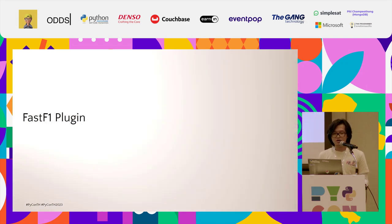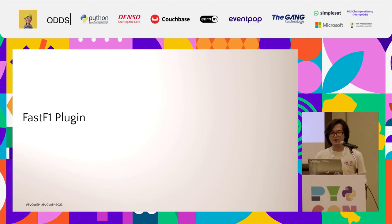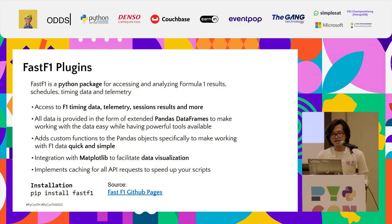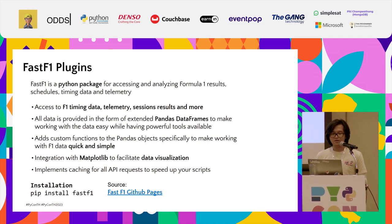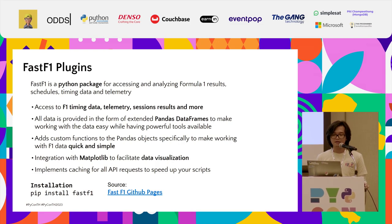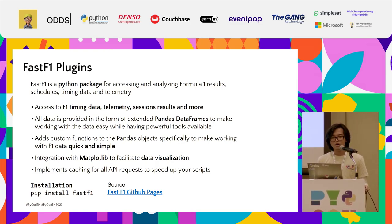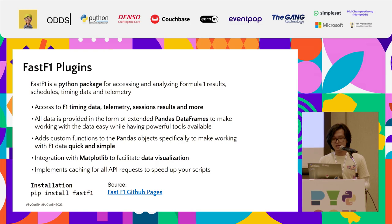Next, we'll get to know the FastF1 library — something I really love about Python, because there's always someone creating a great package for almost anything. FastF1 is a Python package to access and analyze Formula One results, schedules, timing, and telemetry. It provides timing data and telemetry, and the great thing is the data is provided as pandas DataFrames, making it easy to analyze. It also has its own custom functions extending pandas objects, so when you want to tweak something, it's very quick and simple.